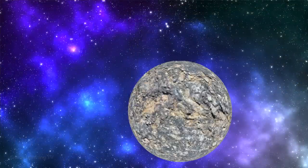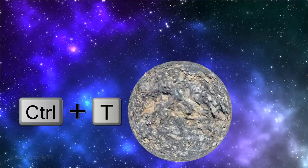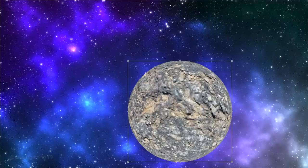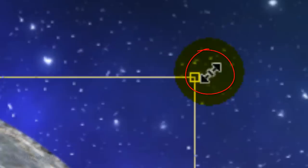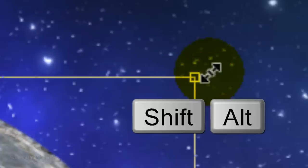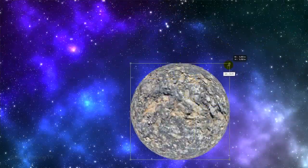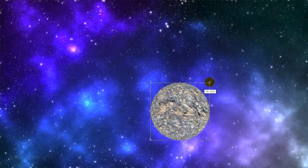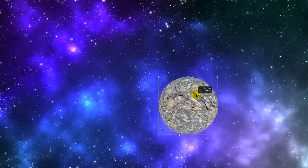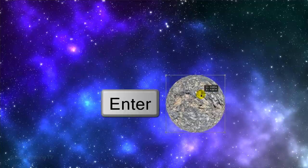To resize it, open your Transform Tool by pressing Ctrl or Cmd+T. Go to a corner and when you see a diagonal double-arrow, hold down Shift and Alt on Windows or Shift and Option on a Mac as you drag it in or out. To reposition it, go inside the Transform and move it. Then press Enter or Return.